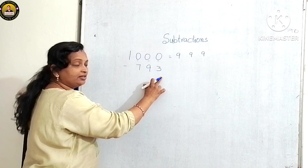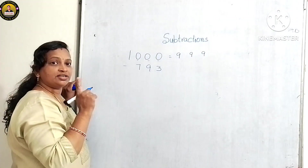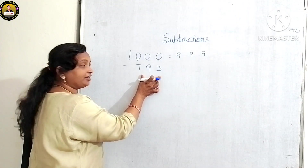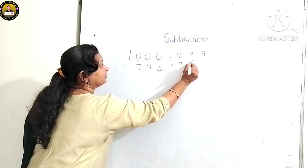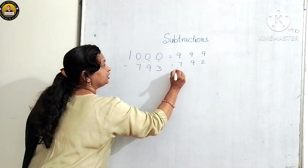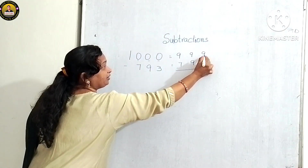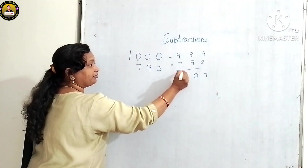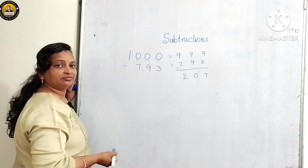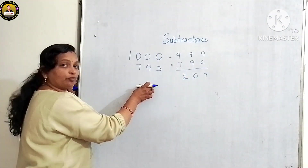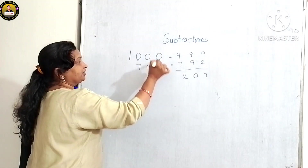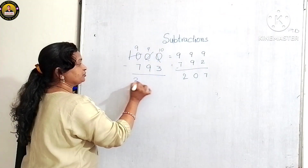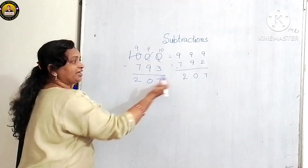From 793, write the predecessor of 793, which is 792. Now subtract: 9 minus 2 is 7, 9 minus 9 is 0, 9 minus 7 is 2. So the answer is 207. You can verify: 793 + 207 = 1000. Same result.